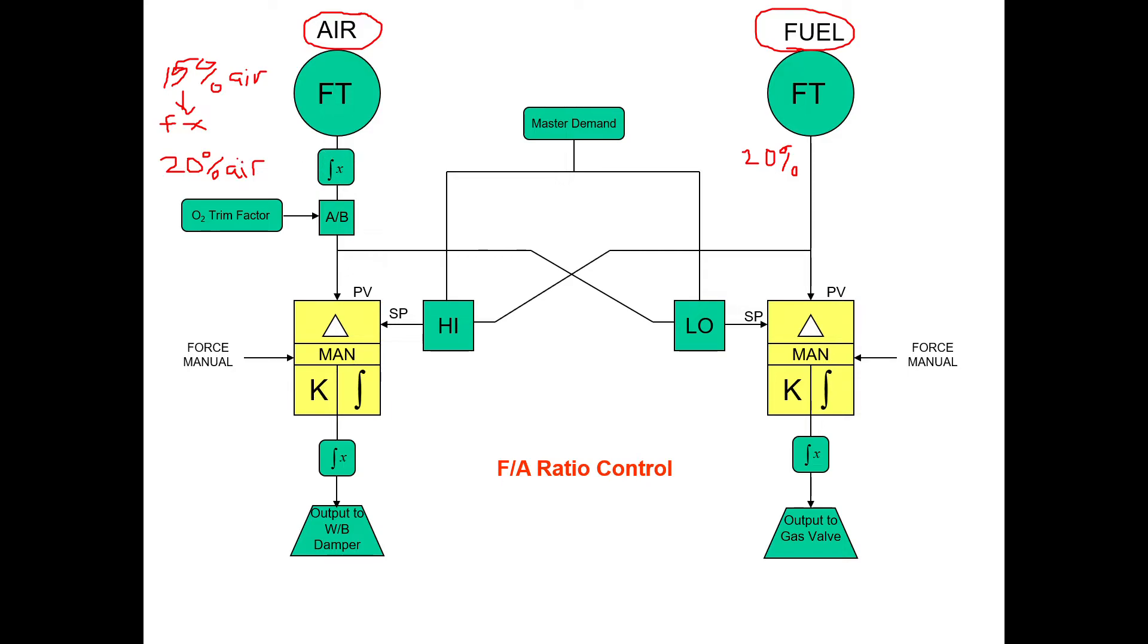So now that we know we take the air, we square root the output value, we characterize that to match gas flow. Now we can begin to look at the cross limiting. Here's the master demand, and you'll see you have a high select block here and you have a low select block here.